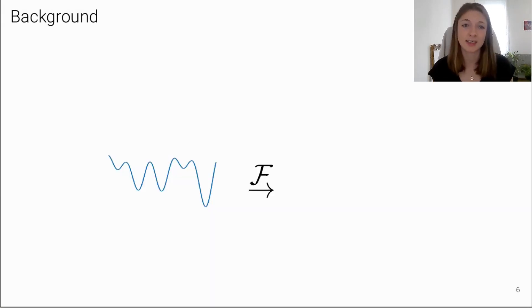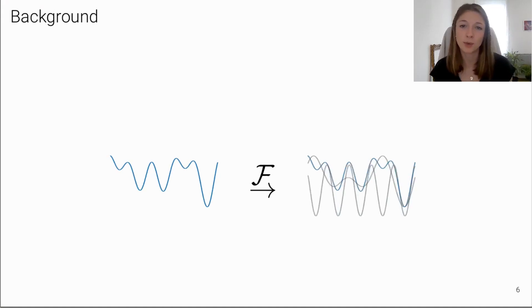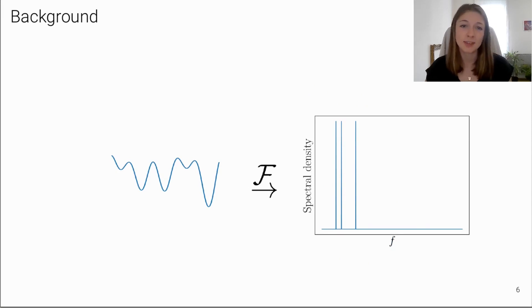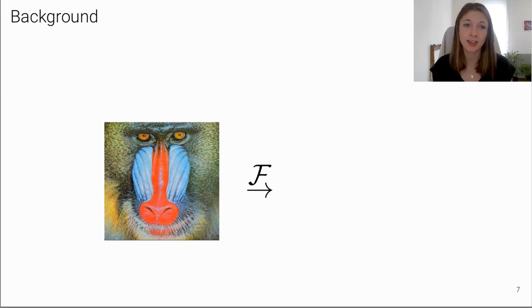To better understand this, let's quickly recall some fundamentals of frequency analysis. The Fourier transform tells us how we can decompose a signal into its individual frequency components. Instead of its frequency components, we can also consider the spectrum of the signal. The spectrum is defined by the magnitude of the frequency components and determines how much of each frequency component the signal contains.